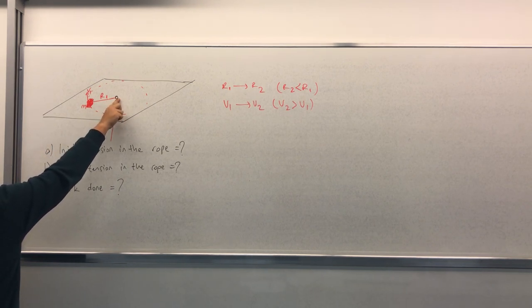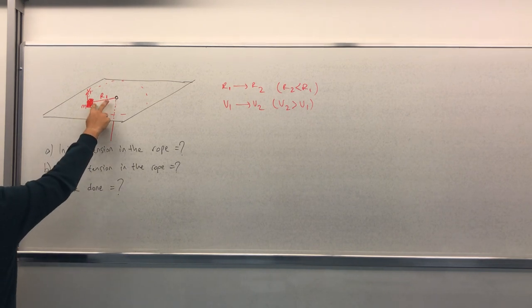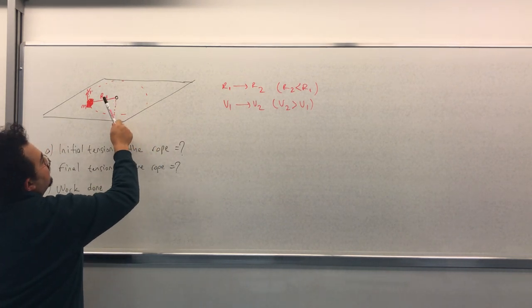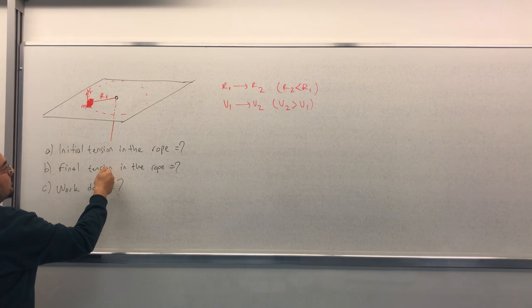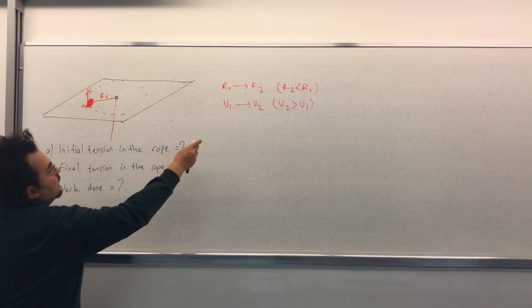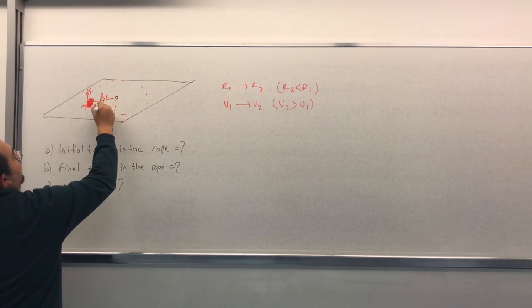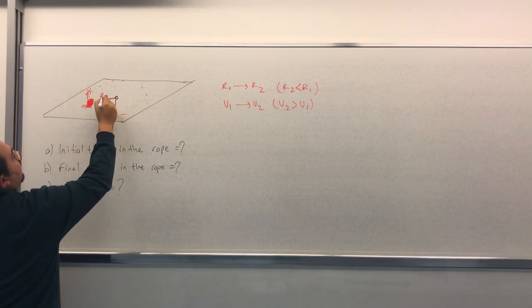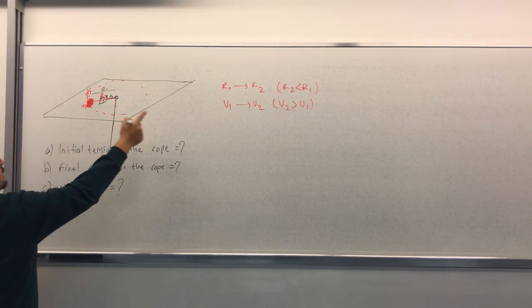The cube moves with velocity v1 initially and this distance is R1. The question says that we make R1 to R2 by pulling this rope from the bottom, so R2 is less than R1. This is the new position for the cube. This is R2 now. This was R1, the big one was R1, and it has the velocity of v2.